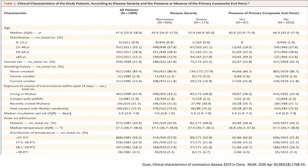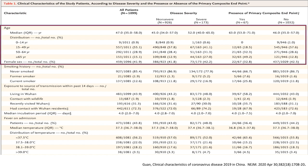Another study from Wuhan City published in the New England Journal in April included 1,099 patients examining their characteristics and presentations. Looking at age groups, disease severity was much higher with elderly patients over 65 years old, consistent with the previous study. The disease was also more common in males than females.